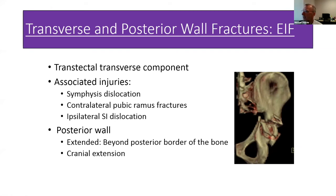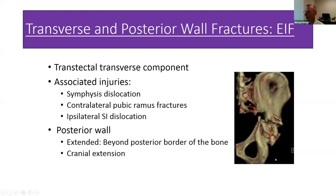For transverse plus posterior wall fractures, indications are the same as for transverse fractures, plus the posterior wall component: if it extends beyond the posterior border of the bone, there's no posterior read for a Kocher-Langenbeck approach. You're left with either a sequential anterior then posterior approach, or the extended iliofemoral. A cranial extension that is difficult through the Kocher-Langenbeck can be managed with a trochanteric osteotomy or through the single extended iliofemoral approach, especially if there is associated impaction through the cranial aspect of the joint.